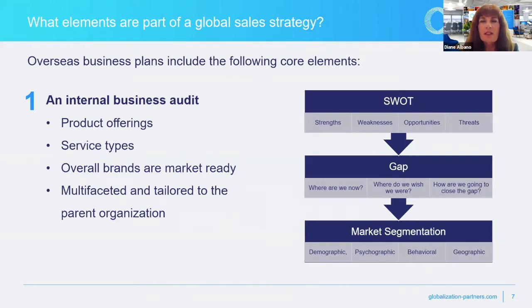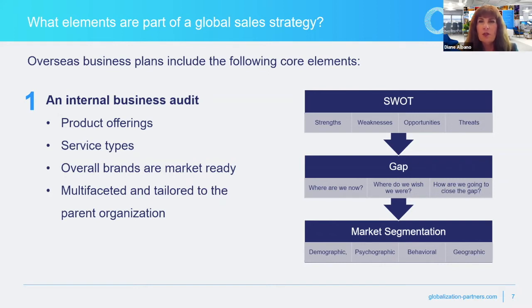These are the core elements to look at when developing a strategy to expand internationally. You need to have an audit — understand the variables like product offerings, service types, and overall brands that are market-ready. Internal audits are multifaceted and tailored to the situation. They can include analyses such as strengths, weaknesses, opportunities, and threats — a SWOT analysis — as well as gaps: where are we now, where do we wish to be, and how are we going to close that gap. And then market segmentation, which can include looking at demographics, behavioral, and geographic considerations.